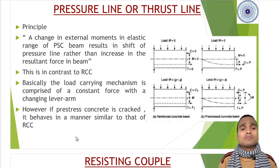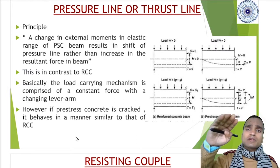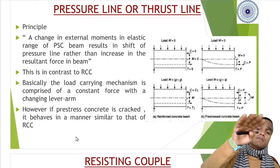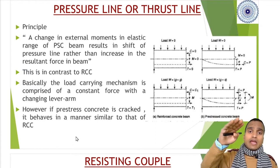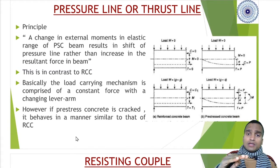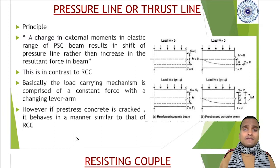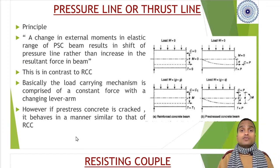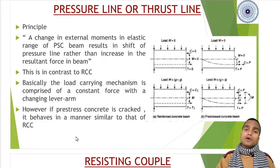A change in external moments, within the elastic range, in a pre-stressed concrete beam results in just a shift of pressure line. If you change the external moment, the pressure line will shift up or down accordingly. There is no increase in resultant force or moments in the beam.